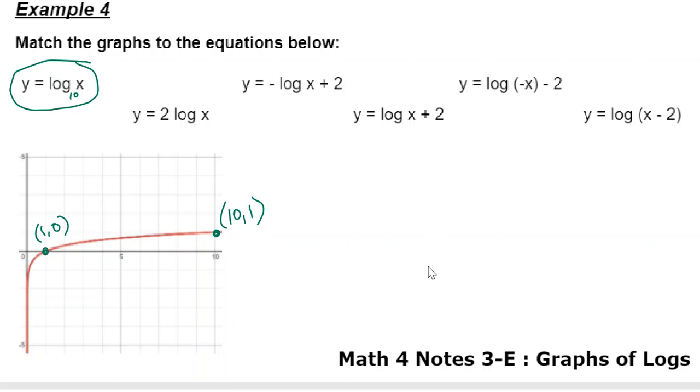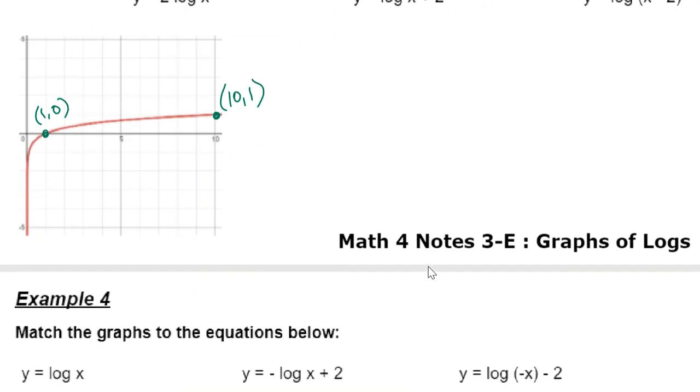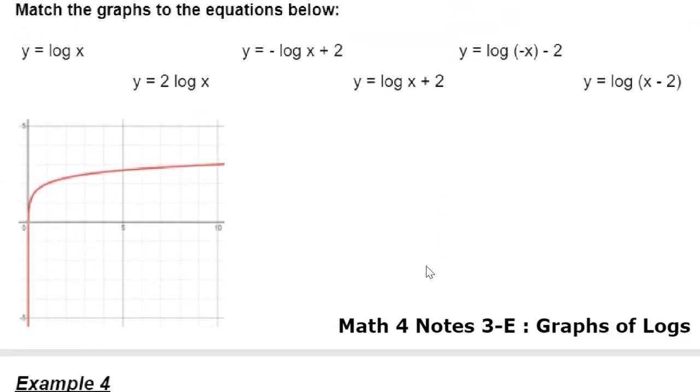For instance, here, I noticed that this point right here is actually up here. I went up 2. And this is no longer at 10, 1. This is like 10, 3. It also went up 2. It's like all I did was take my log and raise everything up by 2 units.